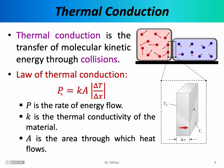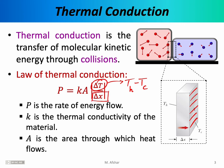According to the law of thermal conduction, power P equals some constant K times the area A times the difference in temperature, divided by the thickness of the wall delta X. P is the rate of energy flow — how much energy is flowing through the wall per second. K is the thermal conductivity of the material, also known as the coefficient of thermal conduction, and it depends on the substance of the wall. A is the cross-sectional area of the wall, delta T is T hot minus T cold, and delta X is the thickness of the wall.